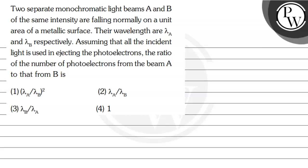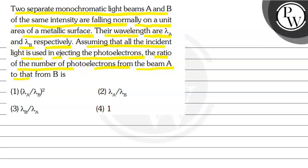Hello Bacho, let's read this question. The question says that two separate monochromatic light beams A and B of the same intensity are falling normally on a unit area of a metallic surface. Their wavelengths are lambda A and lambda B respectively. Assuming that all the incident light is used in ejecting the photoelectrons, the ratio of the number of photoelectrons from beam A to that from B is: (1) lambda A by lambda B squared, (2) lambda A by lambda B, (3) lambda B upon lambda A, and option 4 is 1.